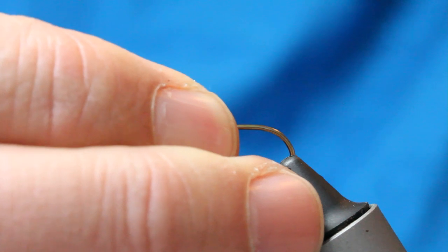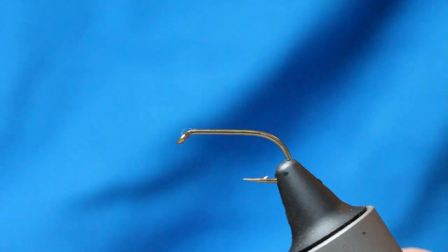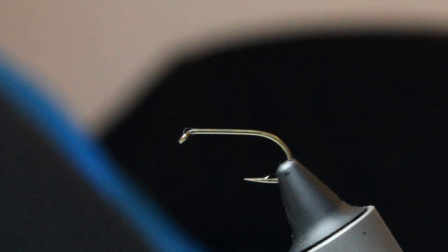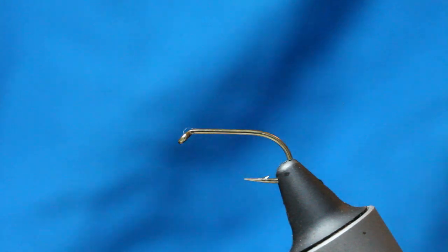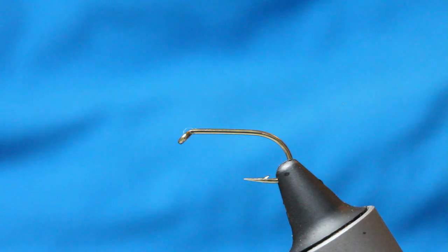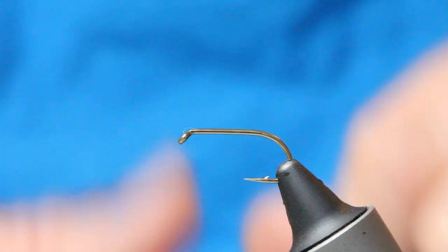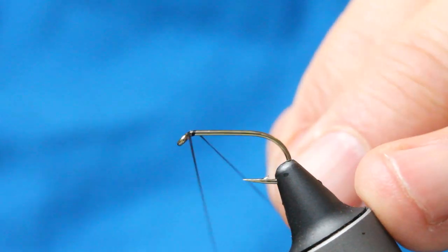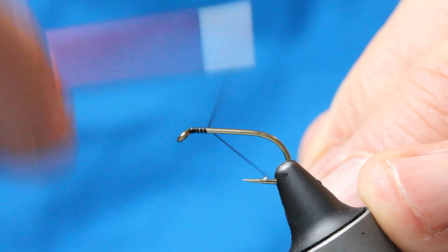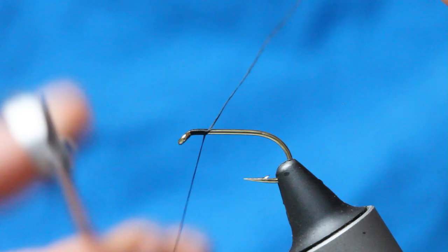The first thing I'm going to do is put a size 10 hook in the vise. This is a Kamasan B175 size 10. The thread I'm using is a 7-0 UTC, and I'm just going to come in and get a little bit of thread on the hook here.